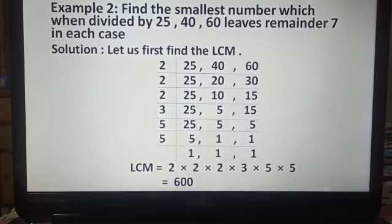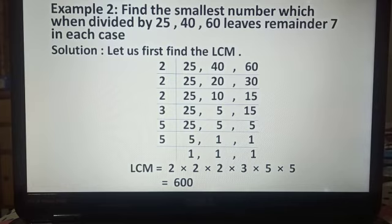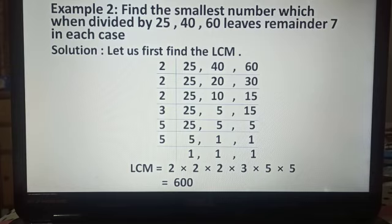Now let us discuss another example. Find the smallest number which, when divided by 25, 40, and 60, leaves a remainder of 7 in each case. In this solution, we first have to find the LCM of these three given numbers. We write the numbers in a line separated by commas: 25, 40, 60.